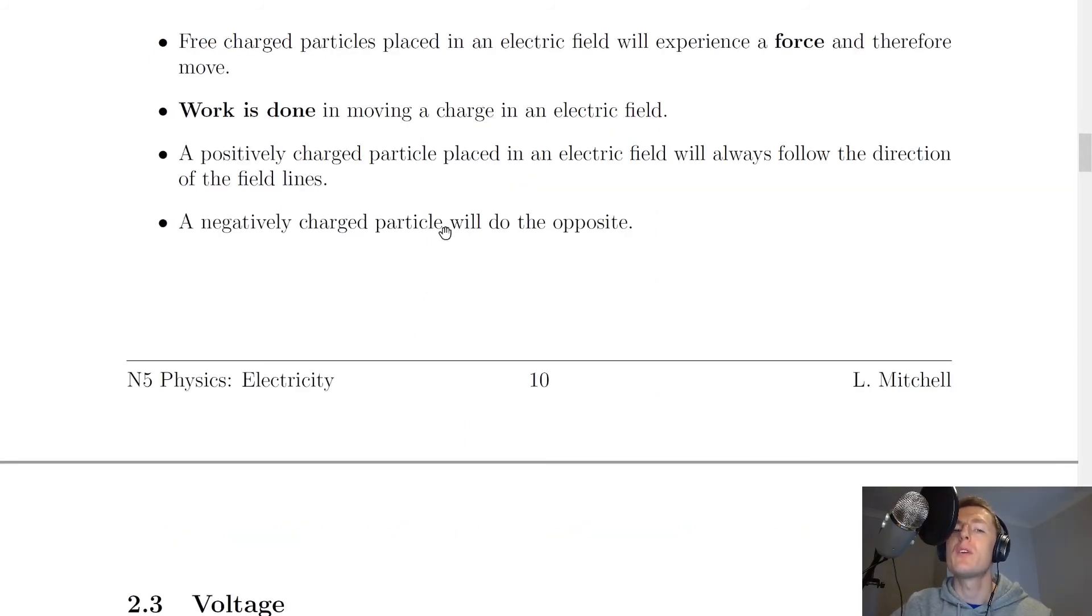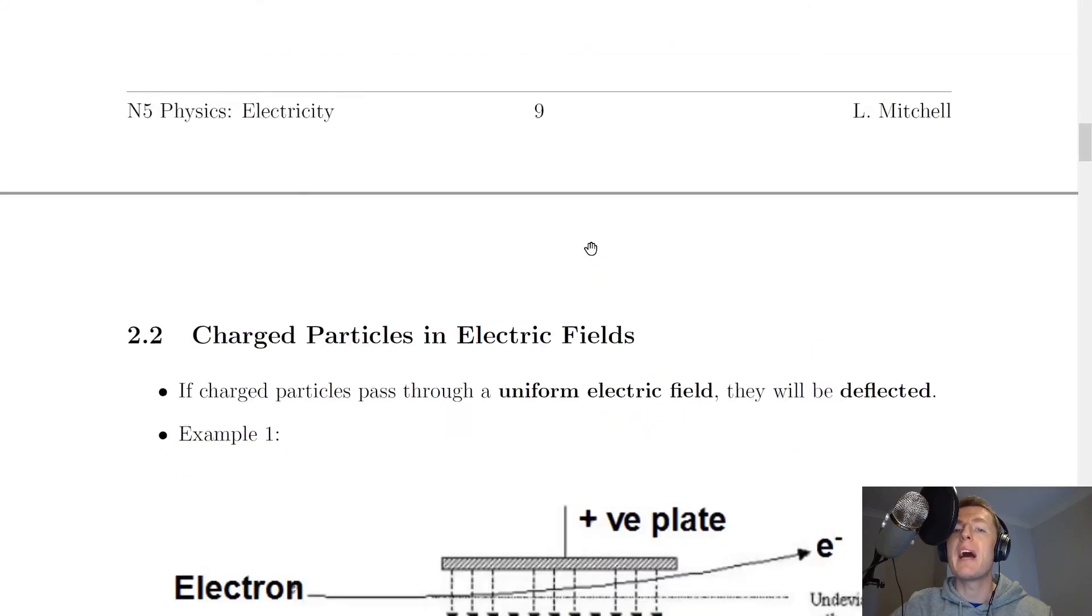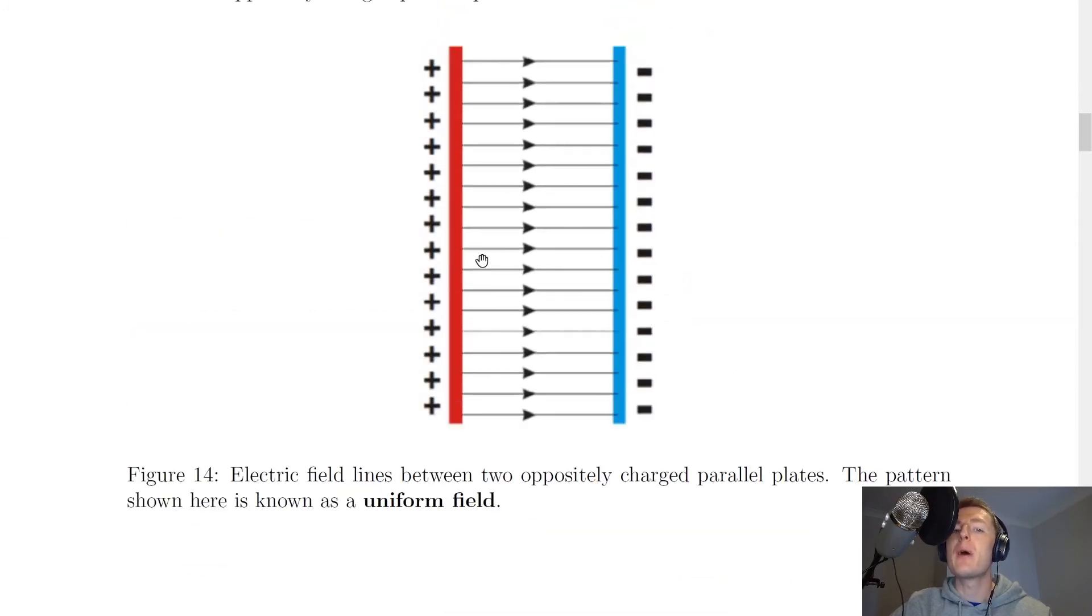A negatively charged particle, however, will do the opposite. If we look back at the diagram there, if we think about a negative charge in there, notice that a negative charge would just want to stay where it is if you had it over this side. But if you started it on the right hand side near the negative plate, it would want to repel away from that and attract towards the positive plate. So a negatively charged particle would actually move against the field lines.